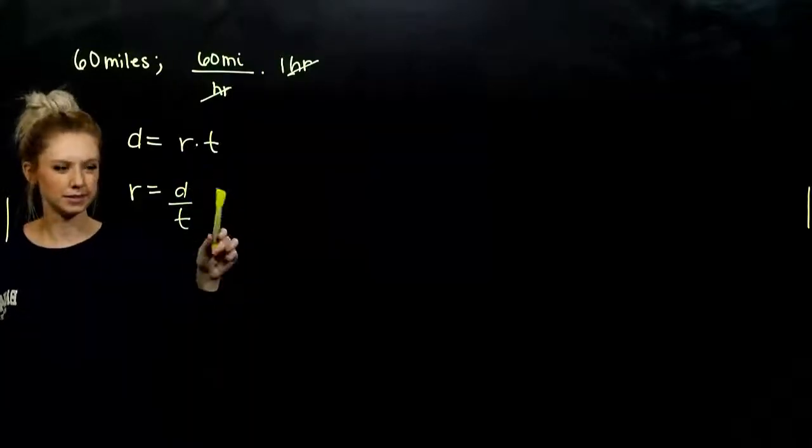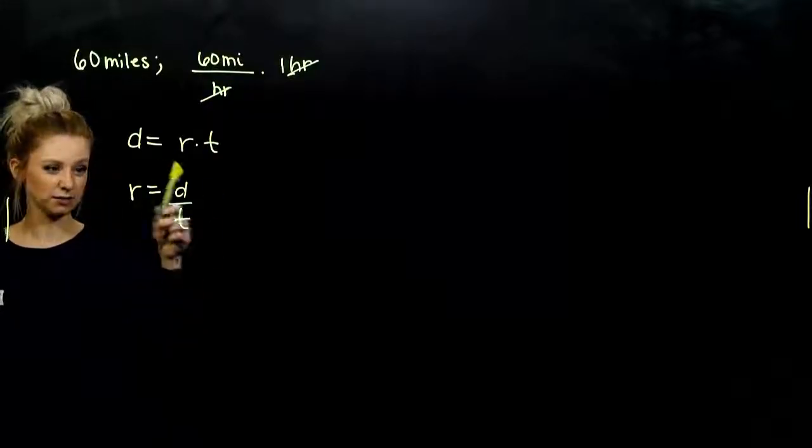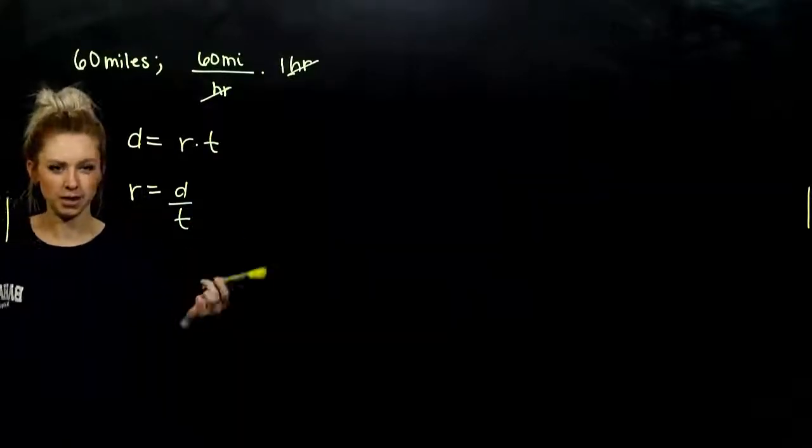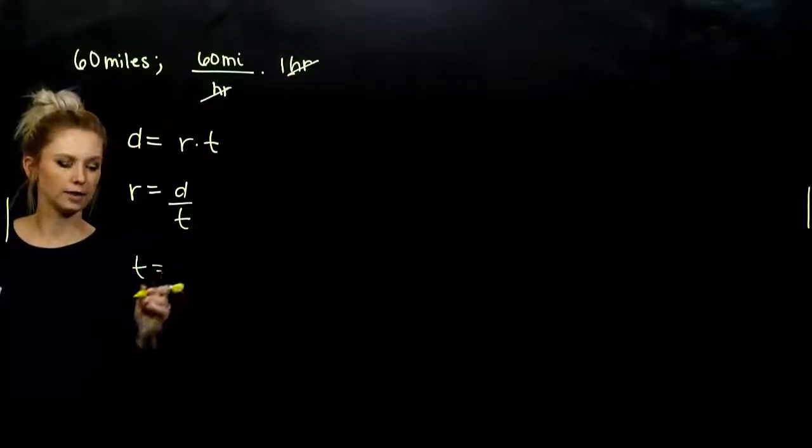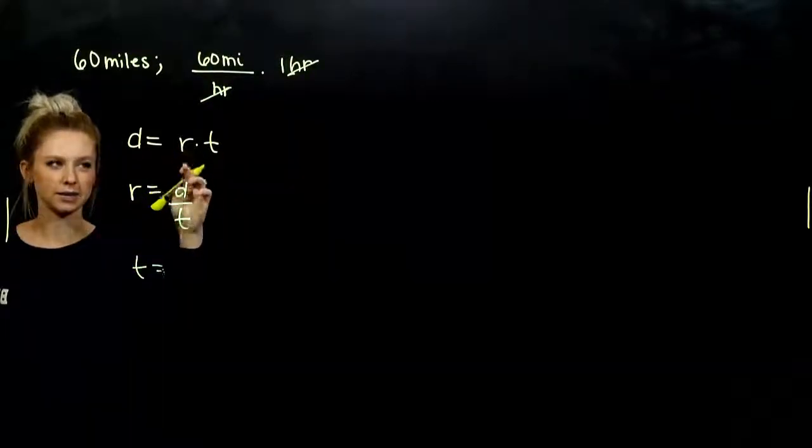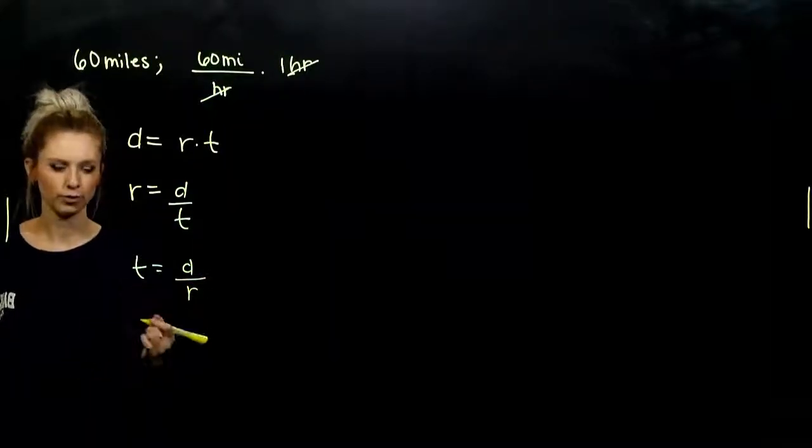I have to divide both sides by time. So let's say I was given the distance and the time, and I was trying to figure out rate. So this version of that dirt formula is going to be helpful. And what's our last option? If I want time on its own, I'm dividing both sides by r. So distance divided by rate.